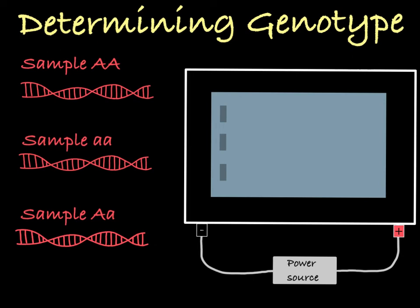If I were to digest all three of these different DNA samples and run them through a gel, I would be able to distinguish which sample came from which genotype, based on the number and sizes of the fragments that appeared when running the gel.